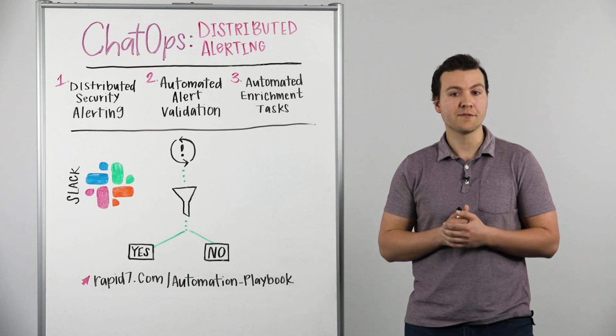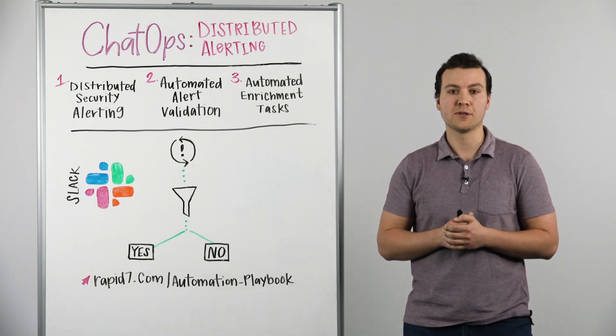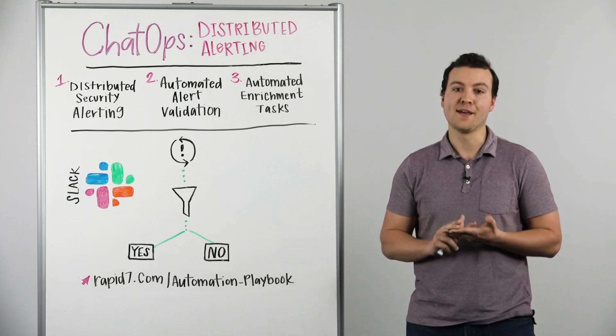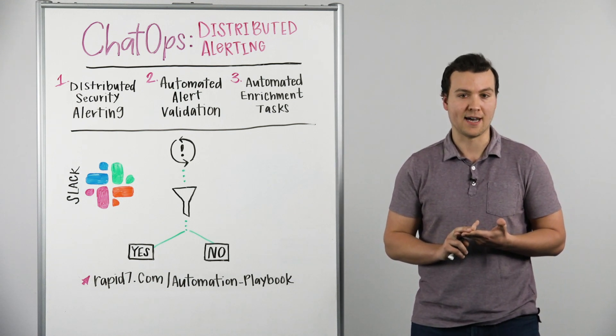We're going to focus on three specific areas where ChatOps can help increase security. First, distributed security alerting. Second, automating alert validation. And third, automating enrichment tasks.